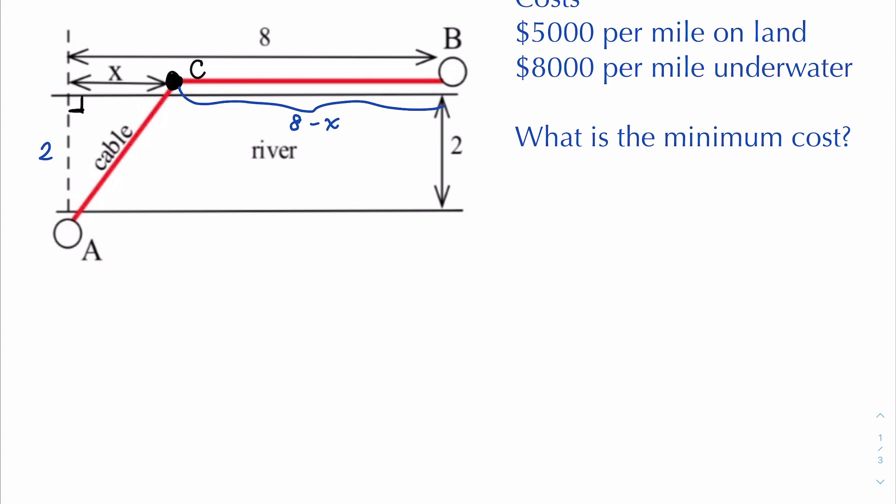That we have to use Pythagorean theorem to get. Just setting it up we know 2 squared plus x squared is equal to, I'm going to call this side AC because it's going from point A to point C. If we solve for AC we get the square root of x squared plus 4. So this side here is the square root of x squared plus 4.